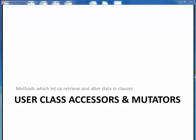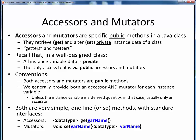In this video lecture, we'll take a look at accessors and mutators in Java classes, which are simply specific methods which let us retrieve and alter data in classes. Accessors and mutators are nothing but specific public methods in any Java class, which are used to retrieve and alter, or get and set, the private instance variables of a class.